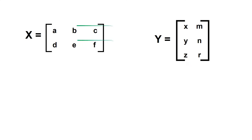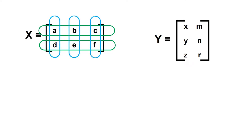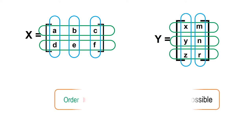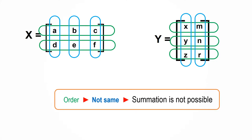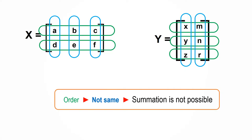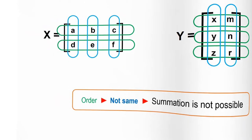Here, two matrices are taken as an example: matrix X has two rows and three columns, and matrix Y has three rows and two columns. Since the orders of the two matrices are not the same, addition of these two matrices cannot be done.